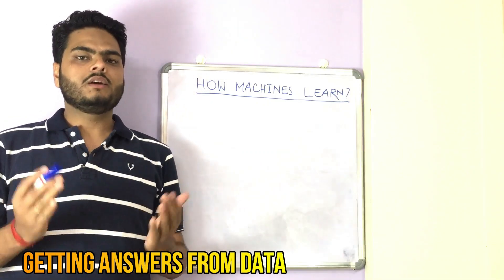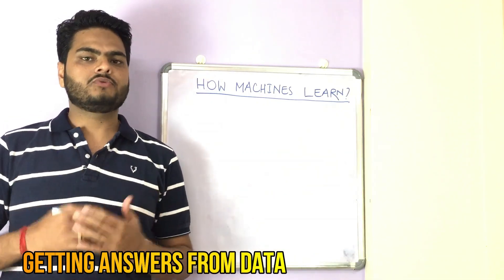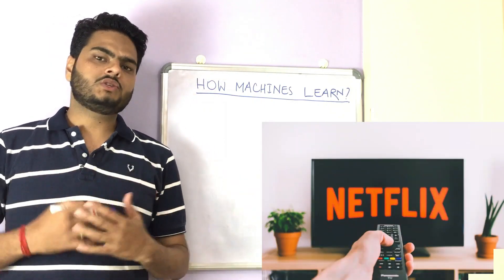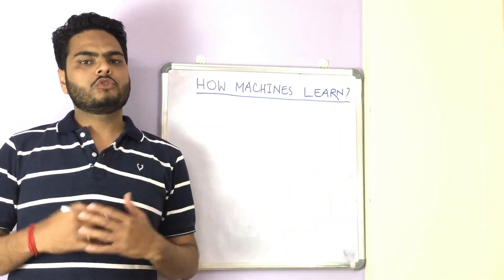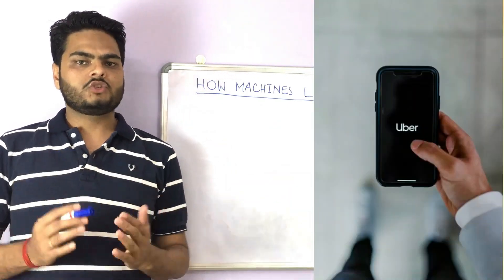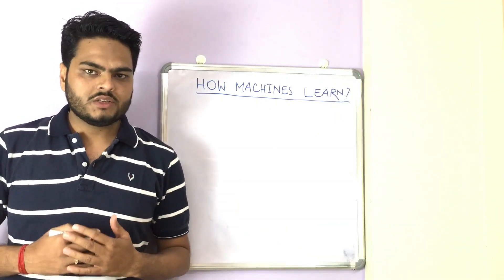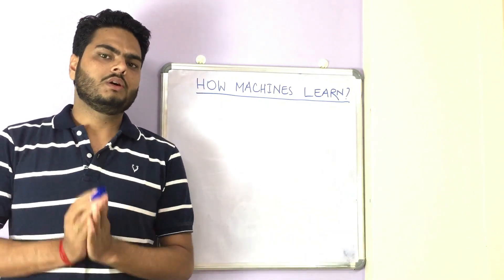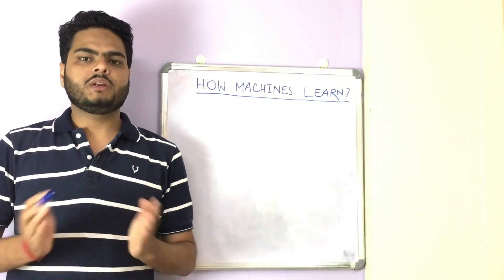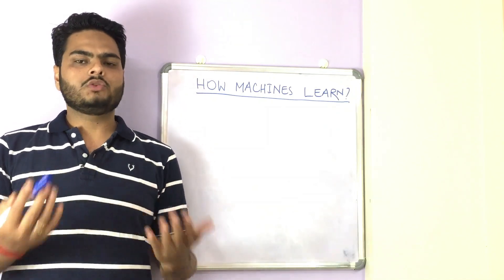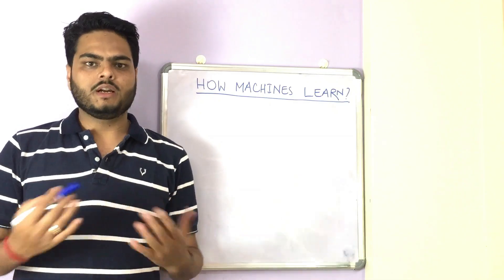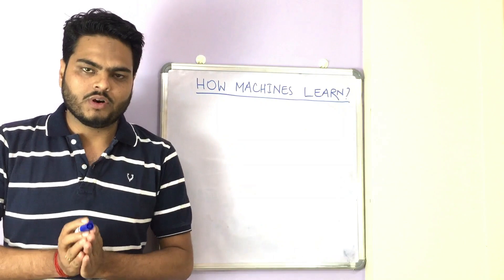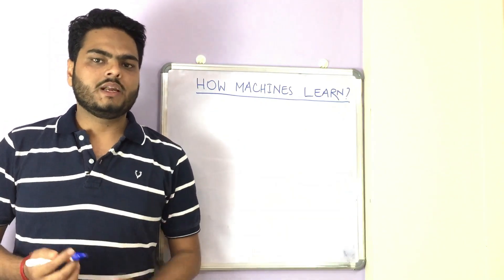Machine learning is about getting answers to our questions from data. What kind of questions? Questions like what should be the next movie I shall watch on Netflix, or what should be the optimal price for my next Uber trip. A machine is able to answer these questions using machine learning. That is what we will focus on in this video. Welcome to Unfold Data Science, this is Aman, and I'm a data scientist.